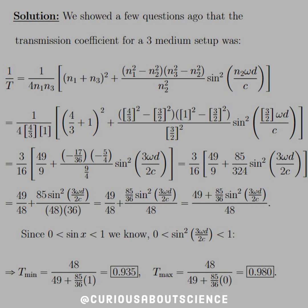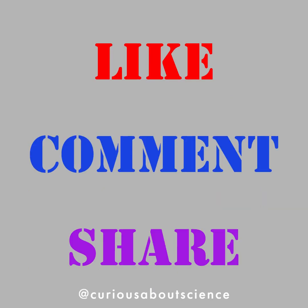And that has a transmission of 0.935, so 94%, and T max is where sine equals 0, so that's 48 over 49, which is 0.98, or 98%. So yes, this is very high transmission, and yes, you can see the fish, the fish can see you. Wonderful. Thank you.